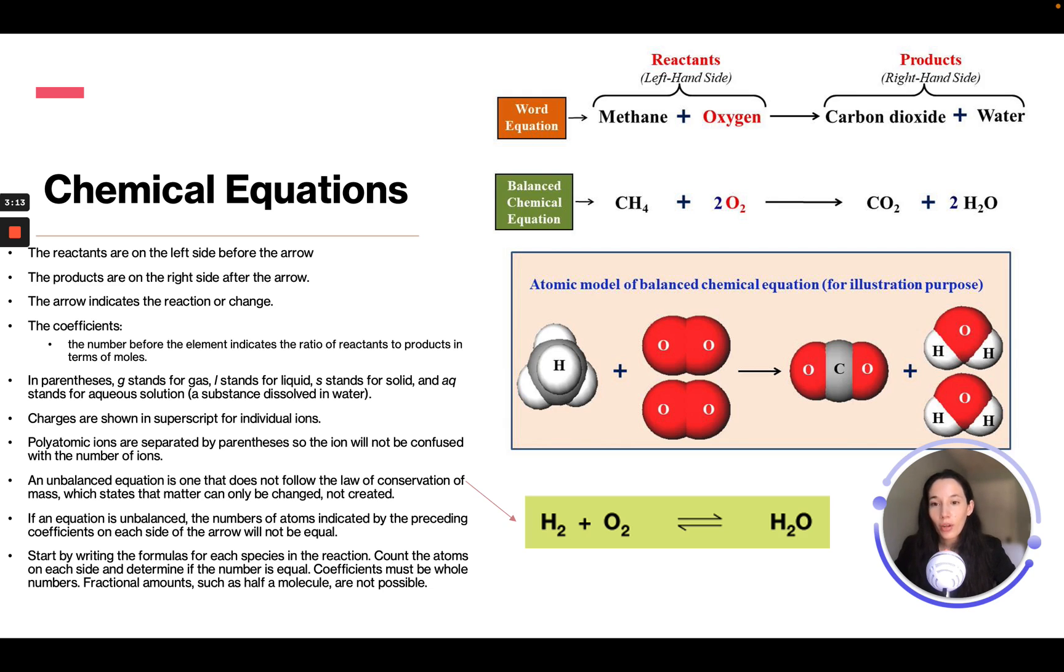Charges are shown in superscript for individual ions. We don't have a superscript, we have a subscript. So, if it was positive or negatively charged, there would be a little positive or negative up at the top here, but we don't have that in our example. Polyatomic ions are separated by parentheses, so the ion will not be confused with the number of ions.